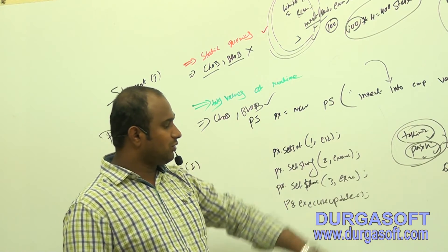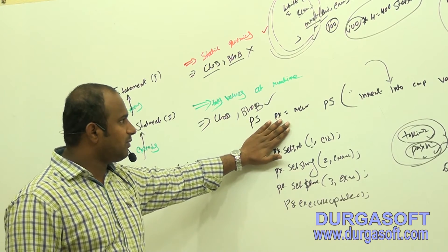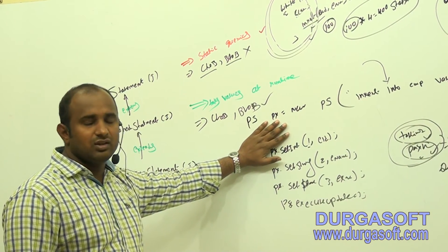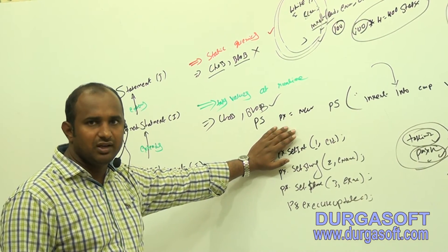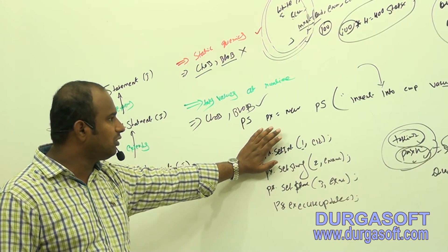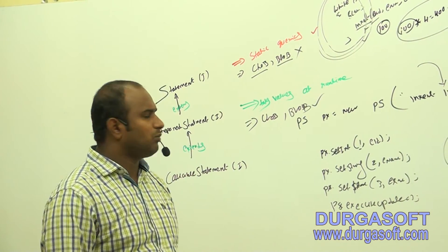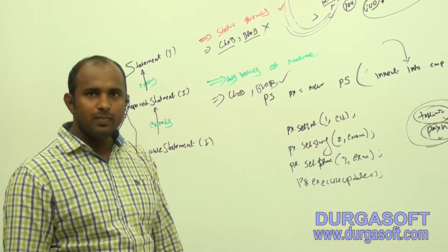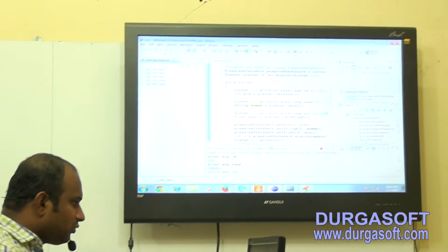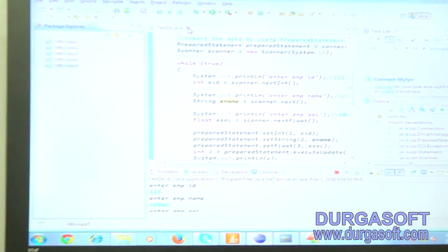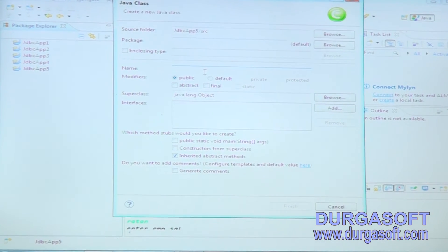We've seen how to pass values to positional parameters for an INSERT query using PreparedStatement. Now I will work with update and delete operations - how to update and how to delete. Please do the practicals; I will give a number of examples regarding the PreparedStatement and Statement interface.